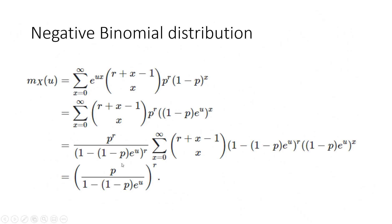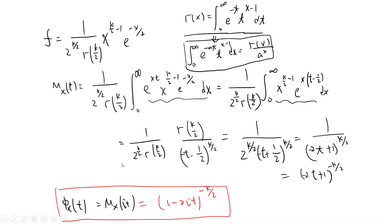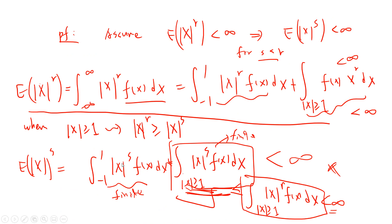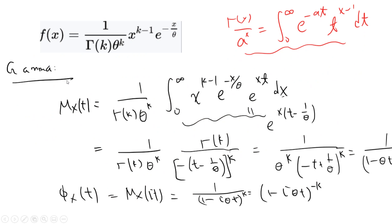Now let's talk about the gamma distribution. Remember this is our gamma distribution formula. For M_X(t), we plug in the terms of the gamma PDF. You can combine the two exponentials, and your parameter a becomes 1/theta minus t.